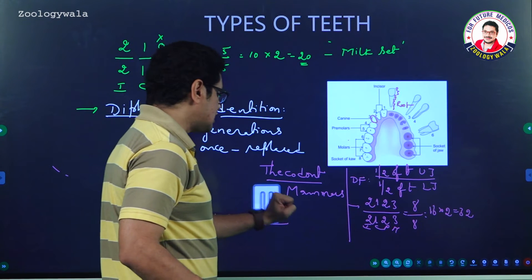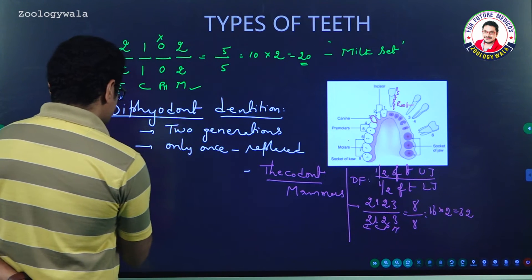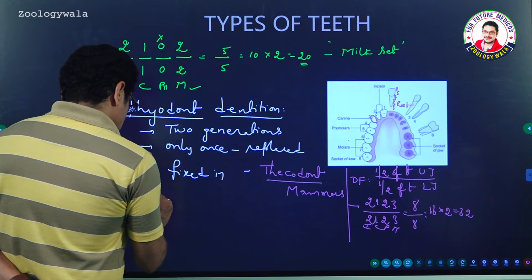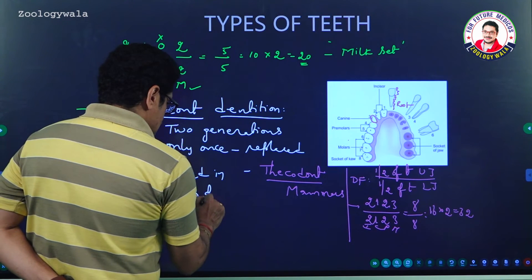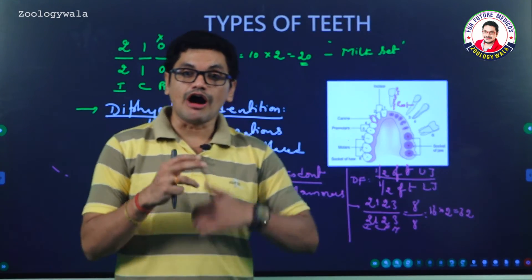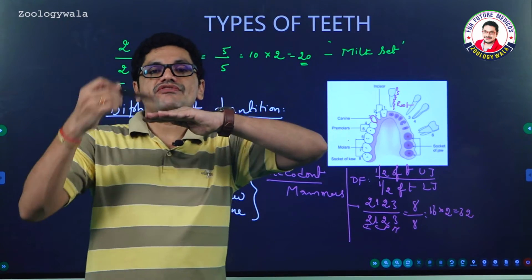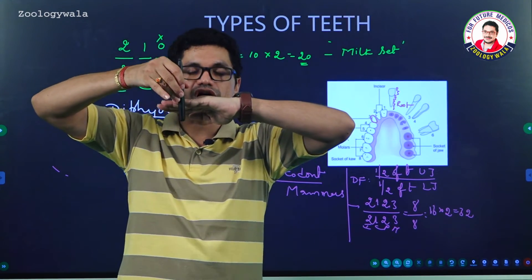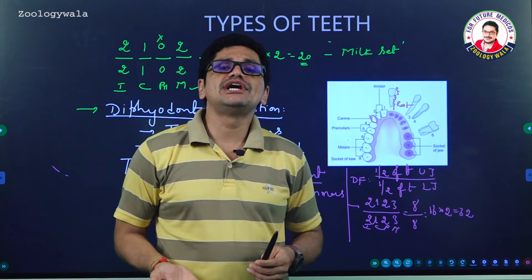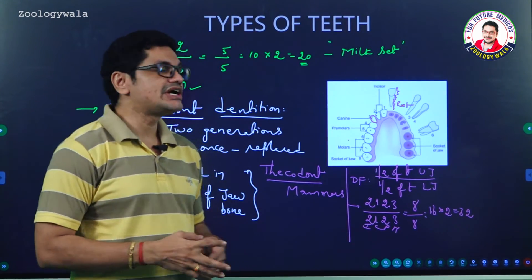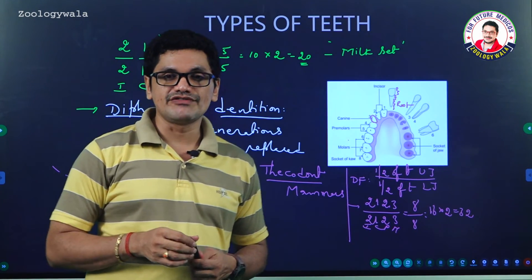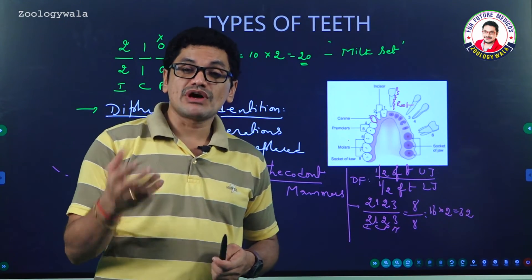Thecodont dentition means teeth are fixed in the sockets of the jaw bone. Thecodont teeth are very strong. The opposite is acrodont dentition, where teeth are not fixed in sockets but just attached at the edge of the jaw bone — so there is a higher probability of losing teeth frequently. This condition is not seen in thecodont dentition. Acrodont dentition is generally present in fish, where teeth are replaced many times.